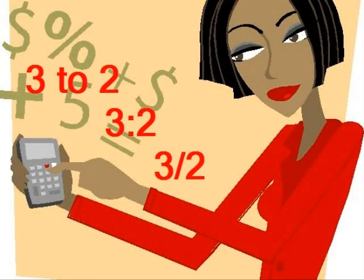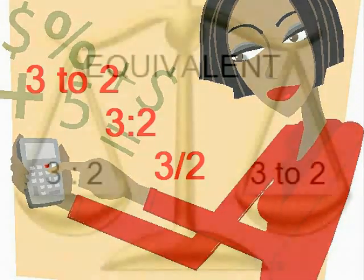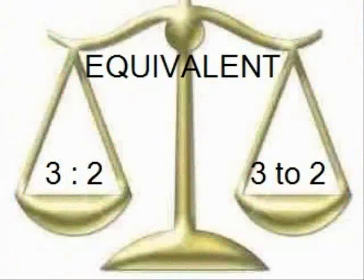In mathematics, we can write ratios in three different ways. Here, we see each way to correctly write a ratio. In these examples, each way is equivalent to the other. Equivalent means that they have the same value. This means that if the ratios were written in a mathematical equation, each side of the equation would balance with the other.